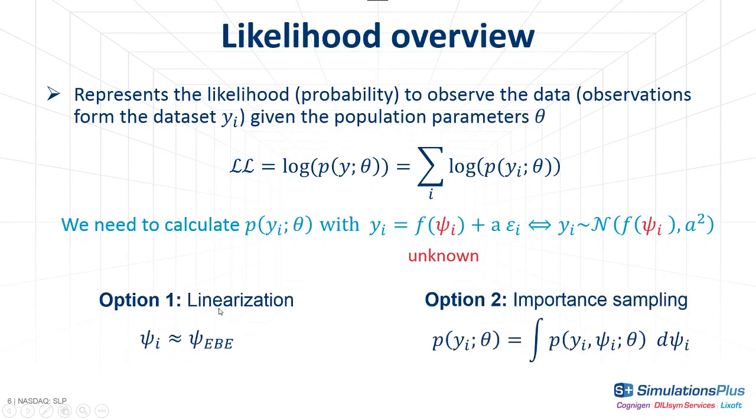So we have two solutions. Option 1 considers that the true individual parameters are unknown, but they are probably not too far from the EBEs that we can calculate with a dedicated task in Monolix. This is the linearization option, which we will present in another video. The second option is to say that if we don't know the true value of the individual parameters, then we can integrate over all possible values. This option is called importance sampling, and I will explain how it works.